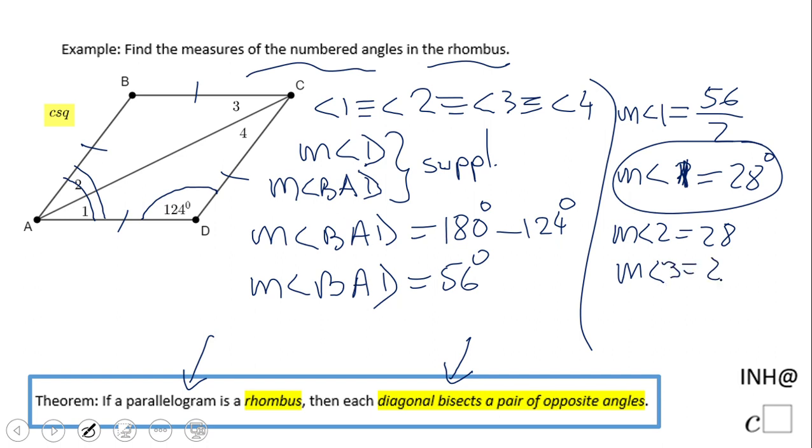All those angles are congruent because the diagonal AC bisects the opposite angles. If you enjoyed this video, don't forget to click the like button and come back to C square for more help. Thank you.